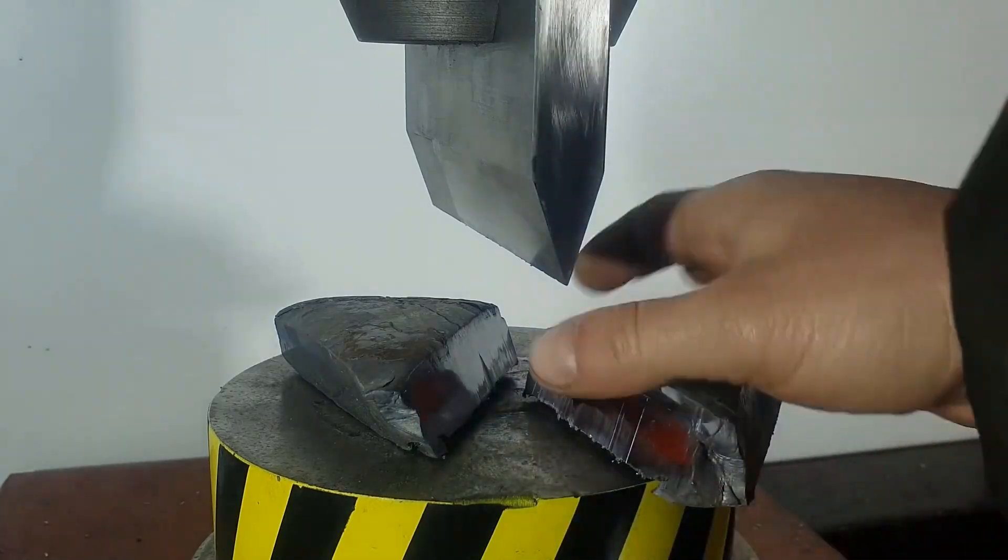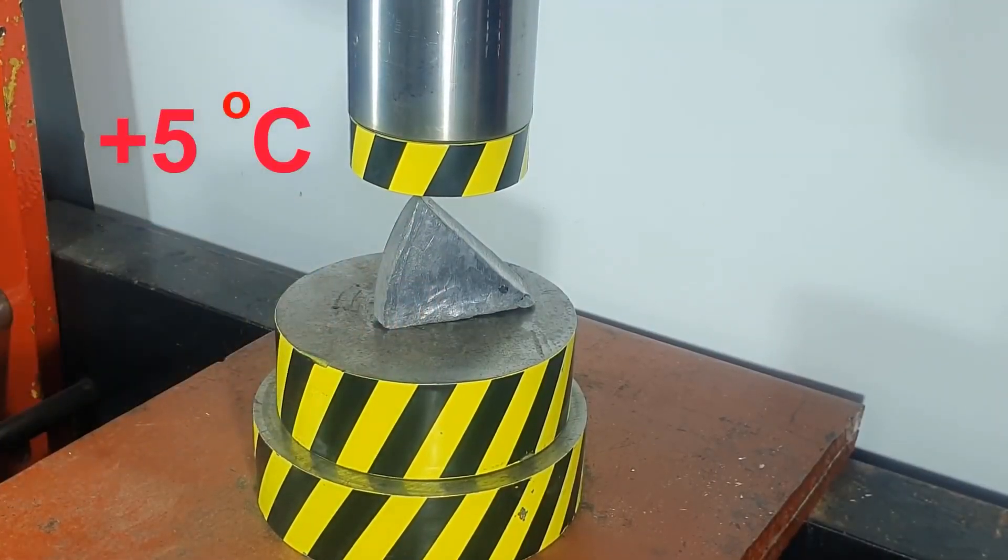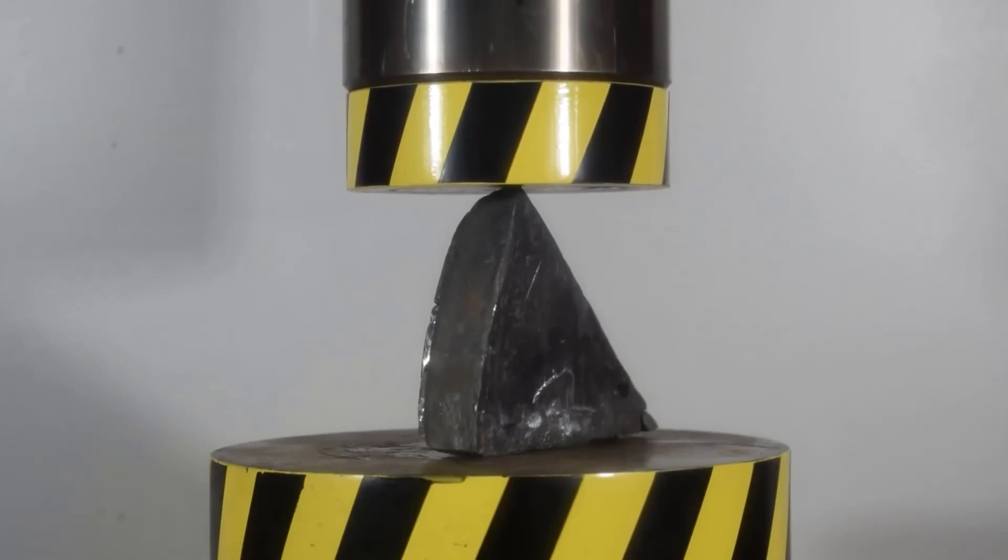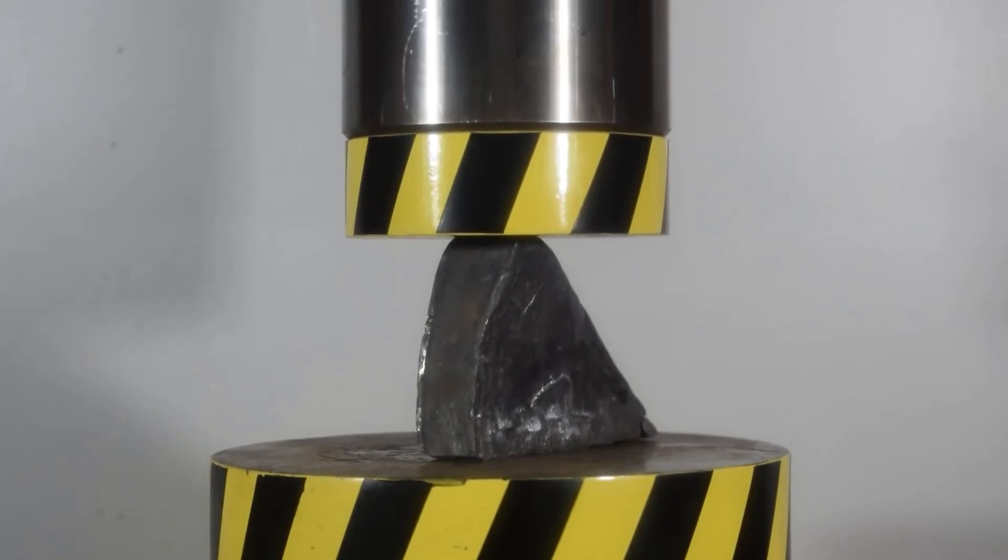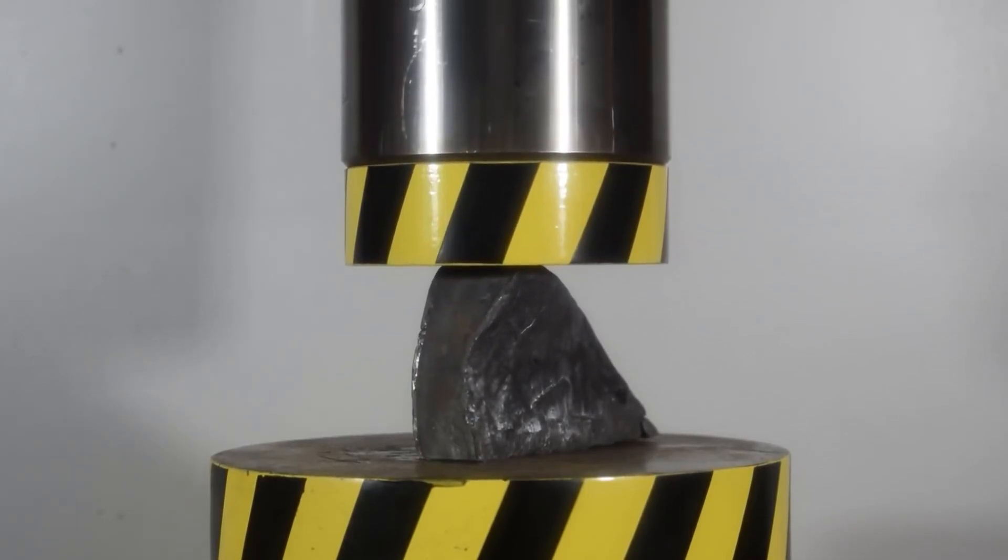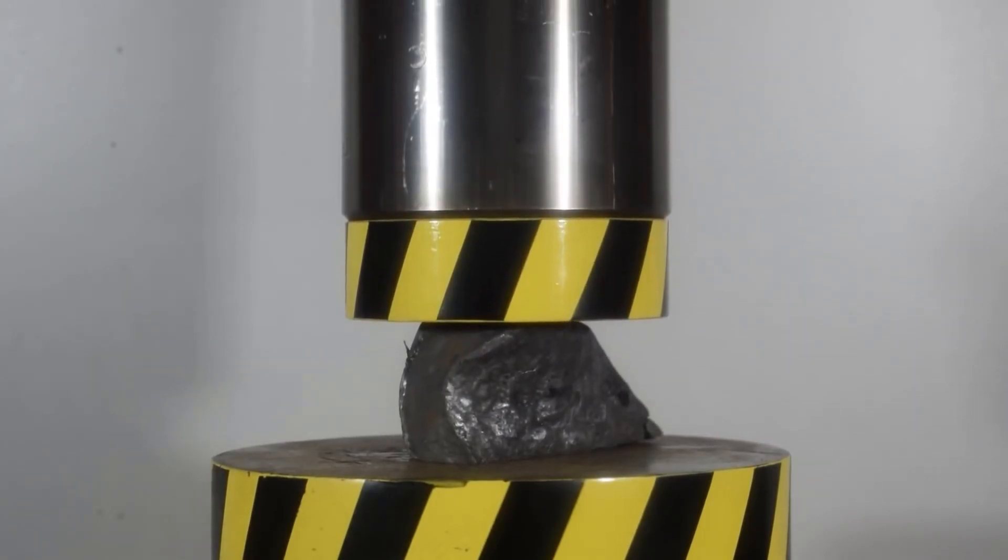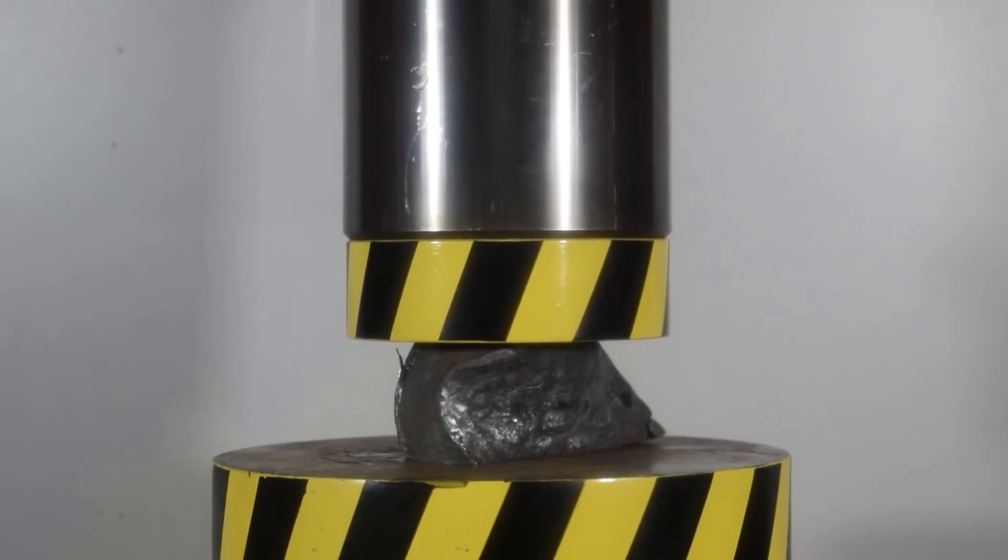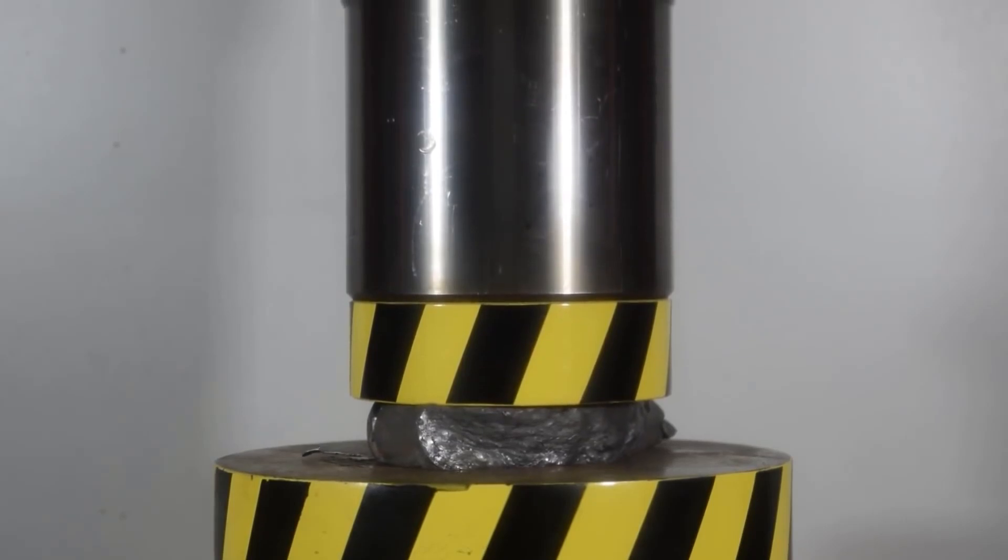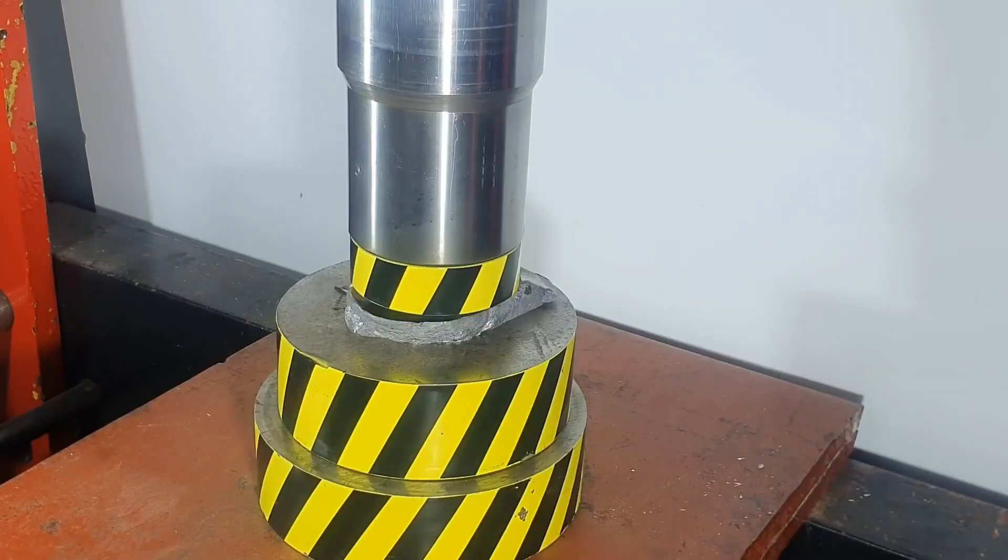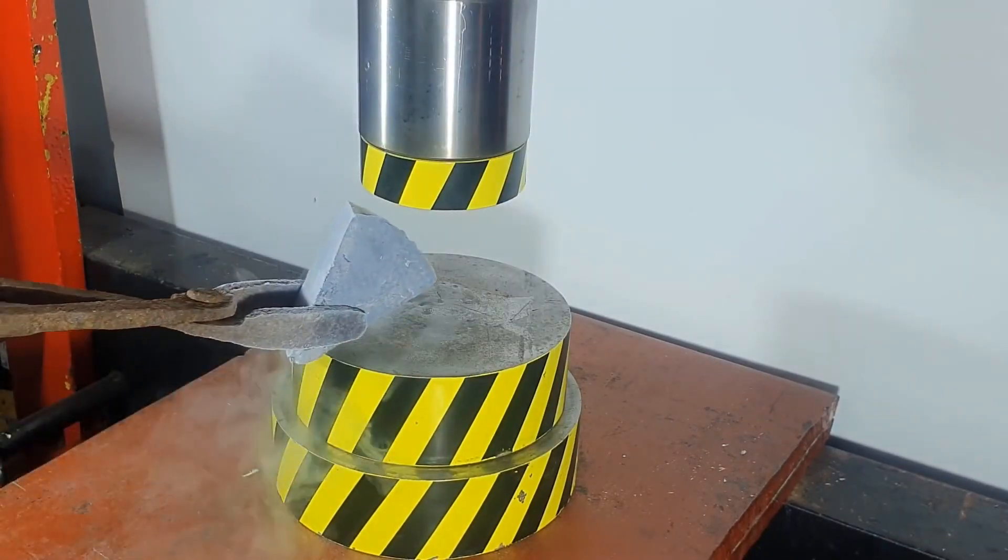And so the first in line is a piece of lead with a temperature of plus five degrees. As expected, it deformed easily. And now super cold lead.